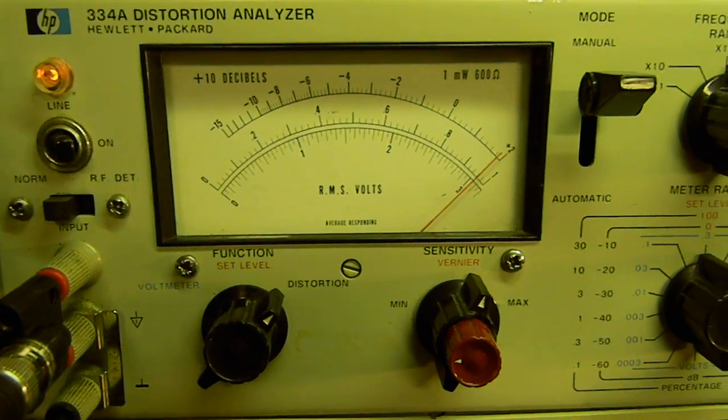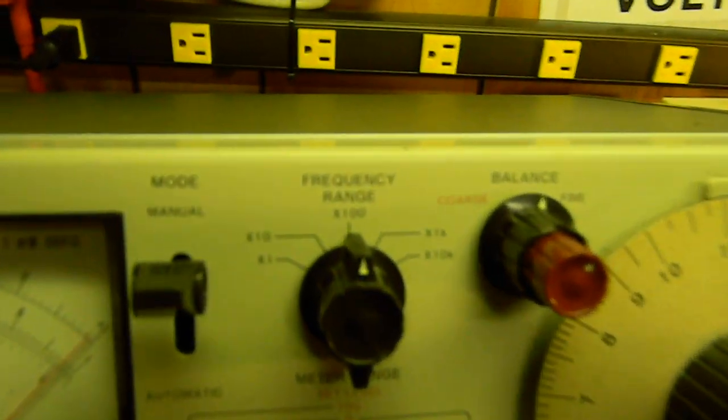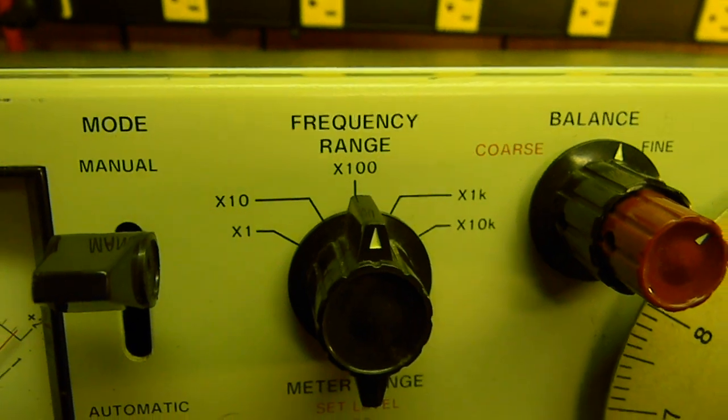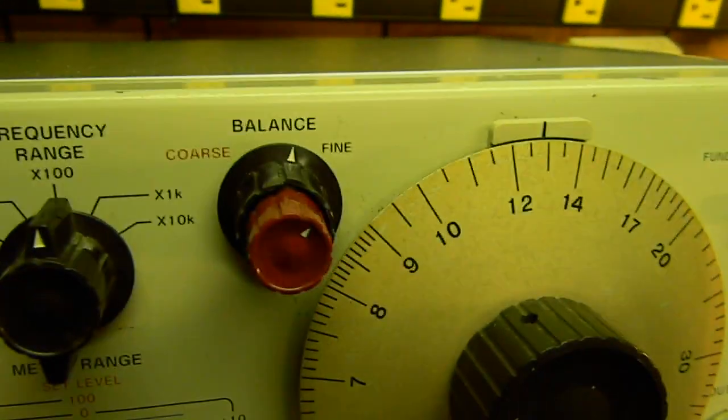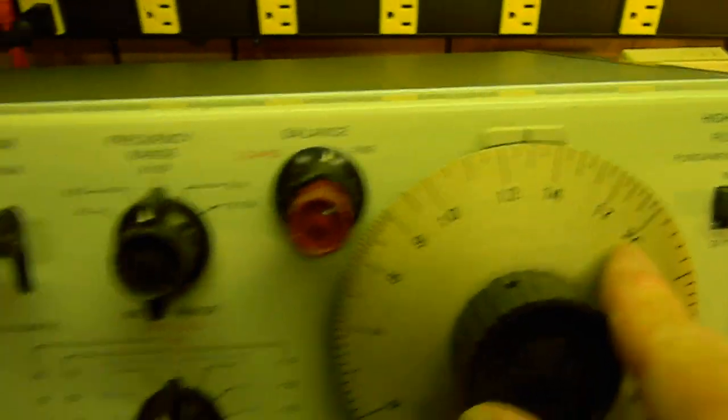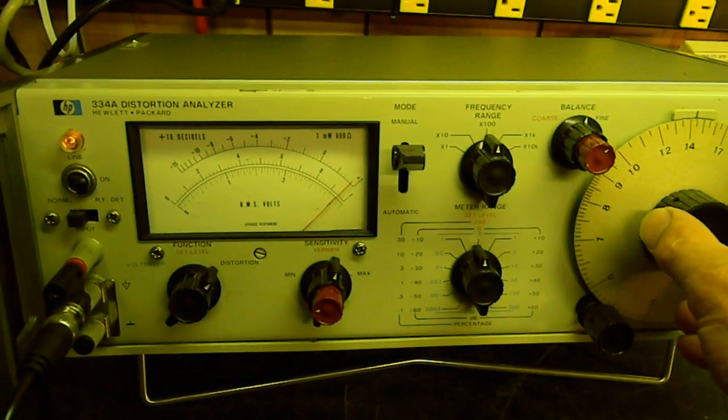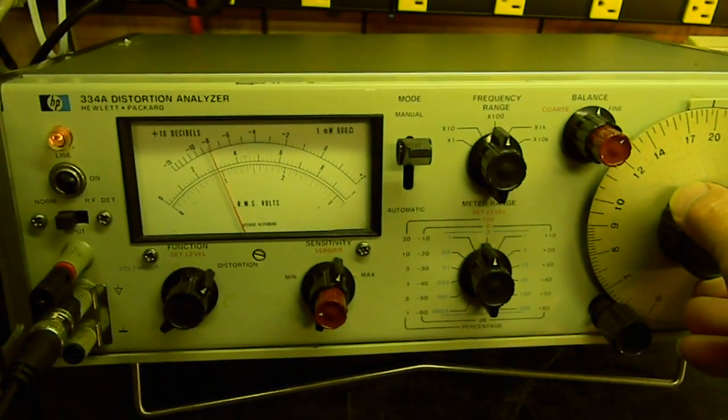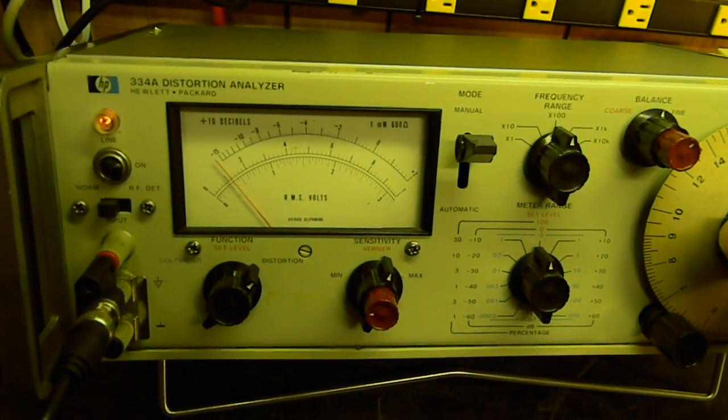Now that we're in distortion, we've got to find the frequency. This is times 100. Remember we're at 2 kilohertz, so we've got to change this to 2 over here. We're going to have to turn it to about right there. As we do, the meter should start going down dramatically. There we go. What we want to do is null it.